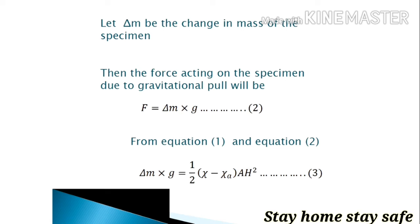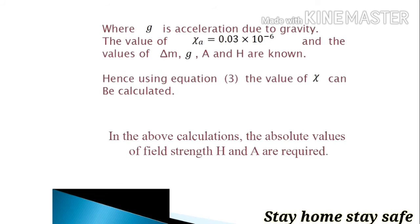Now when the situation is of balancing, when both pans are in the balancing situation, we can write from equations 1 and 2: Δm times g equals one-half times (χ minus χ_A) times AH squared, as equation number 3.